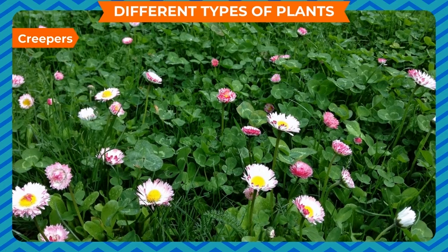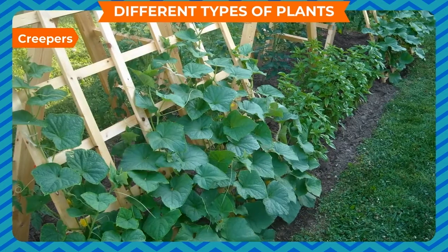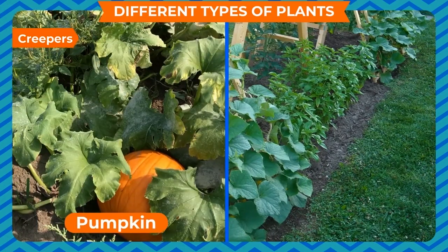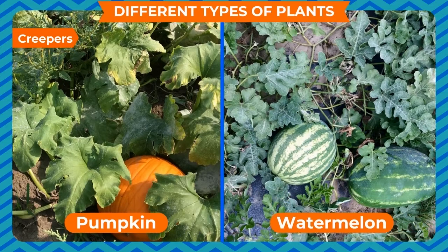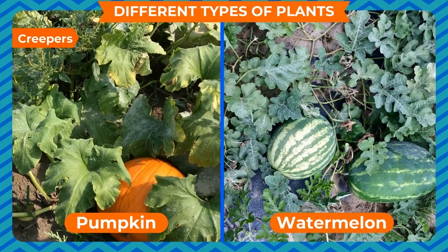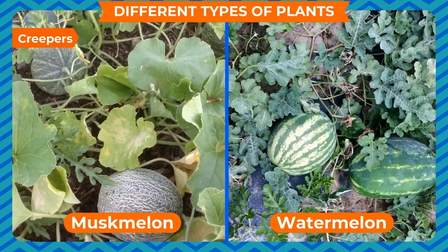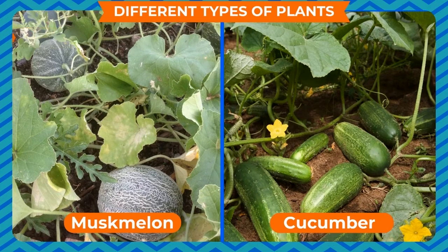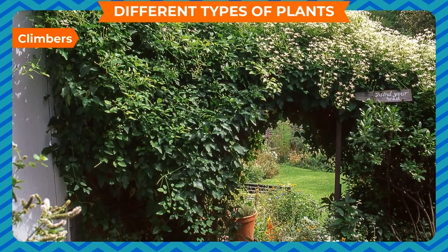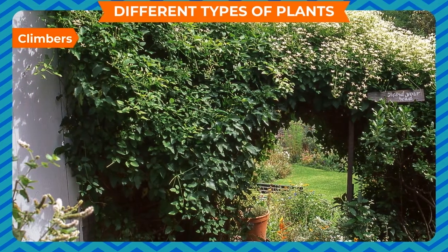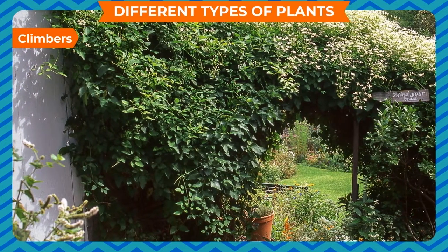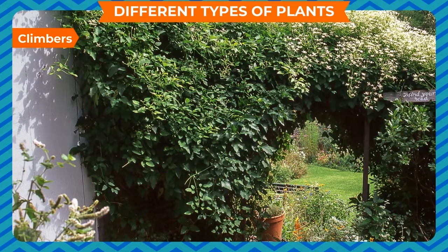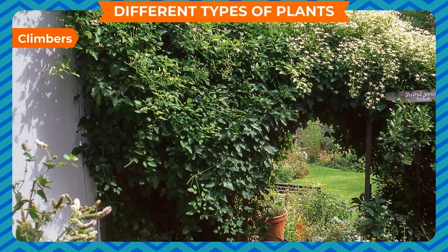CREEPERS: Some plants have a weak stem and cannot stand up straight. They creep and grow along the ground. These plants are known as CREEPERS. Pumpkin, Watermelon, Muskmelon, and Cucumber are CREEPERS.